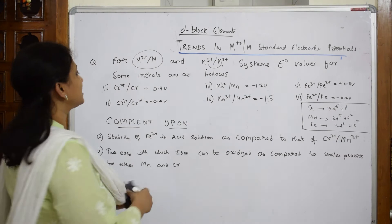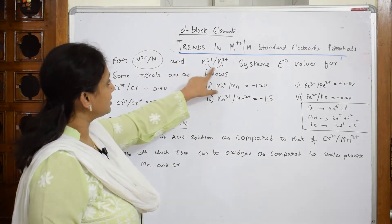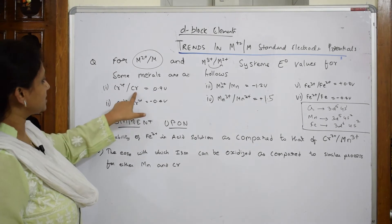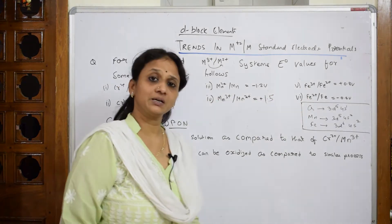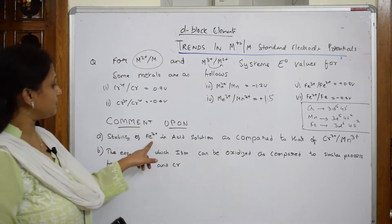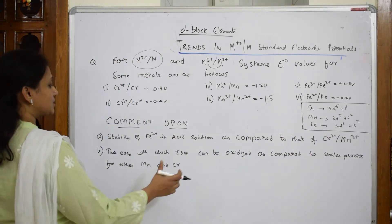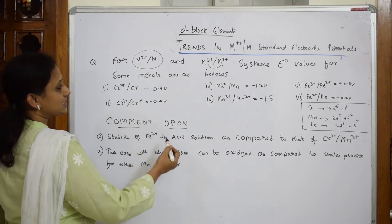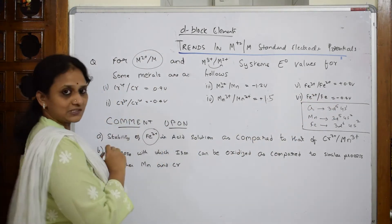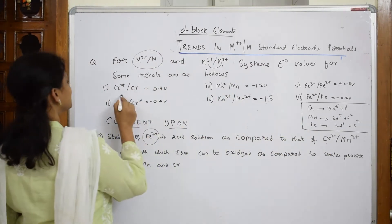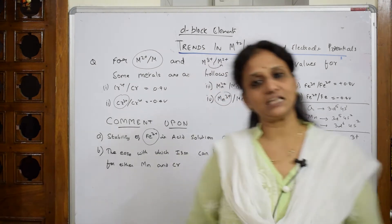The E° values for some metals are given — E° values will be given in the exam. They're asking about the stability of Fe³⁺ in acid solution as compared to that of Cr³⁺ and Mn³⁺. So Fe³⁺ is getting converted to Fe²⁺, Cr³⁺ is here, and Mn³⁺ is here. They want me to see which is most stable.